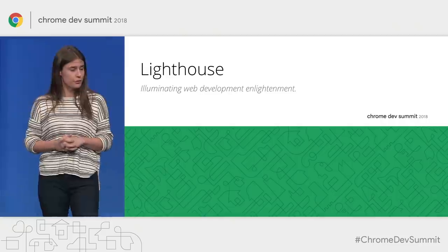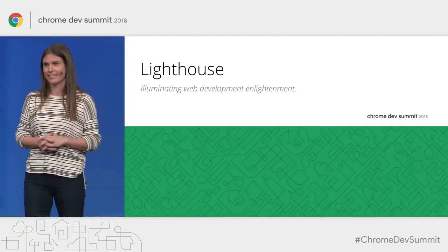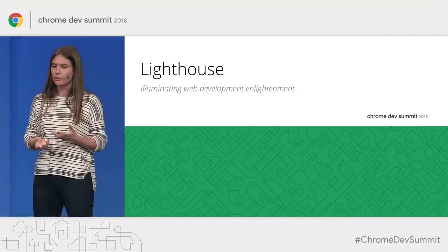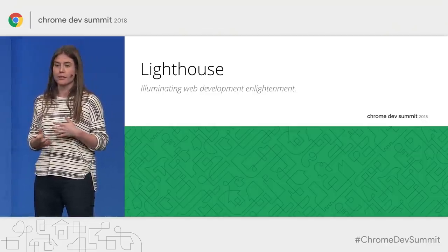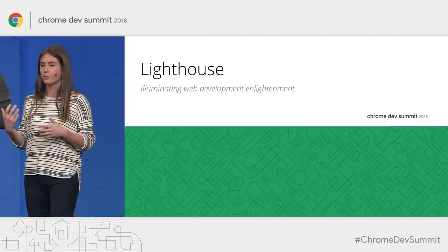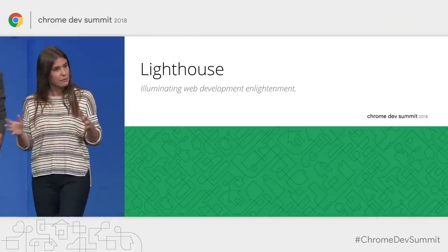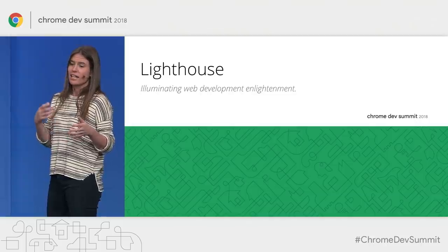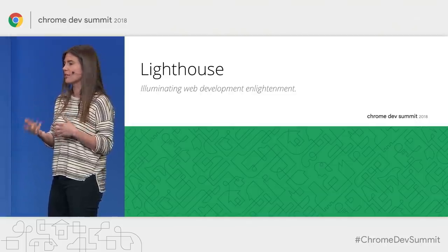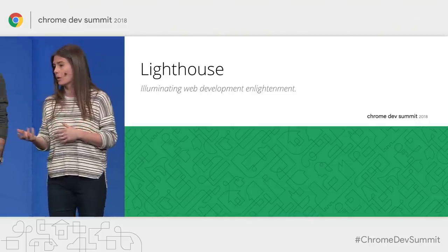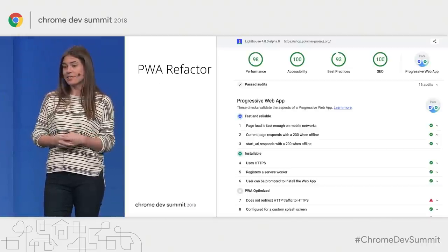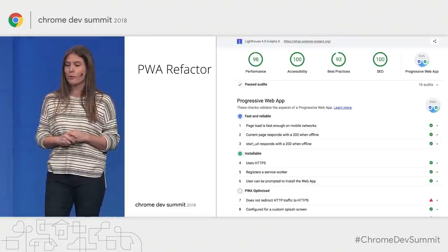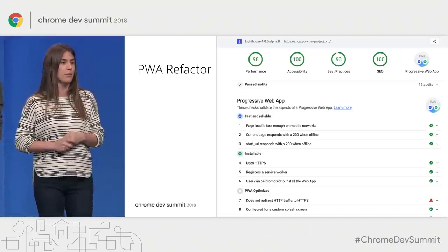For those of you who aren't familiar with Lighthouse, it's an open source automated tool for improving the quality of web pages. You can run it against any web page — either public or requiring authentication — and it has audits for performance, accessibility, PWA, and more. I'm excited to tell you about some things that we've been doing with Lighthouse.